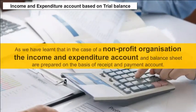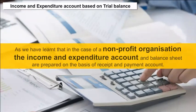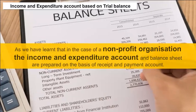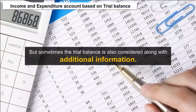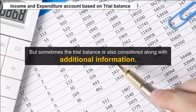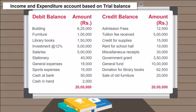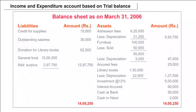Income and expenditure account based on trial balance. In the case of a non-profit organization, the income and expenditure account and balance sheet are generally prepared on the basis of the receipt and payment account, but sometimes the trial balance is also considered along with additional information. For example, from the trial balance and other information given below for a school, prepare the income and expenditure account for the year ended 31st March 2006 and a balance sheet as on that day.